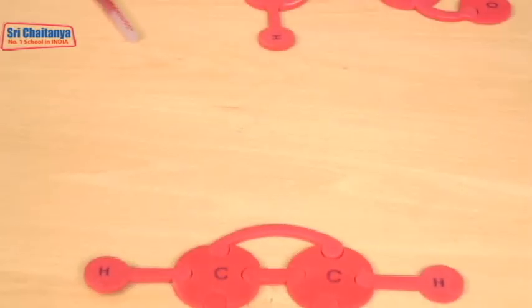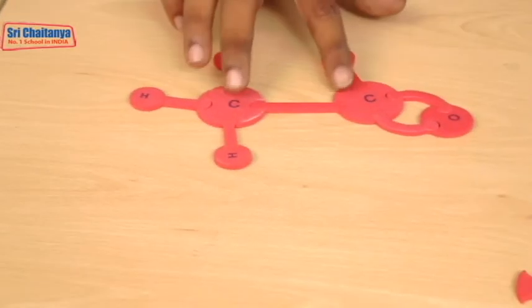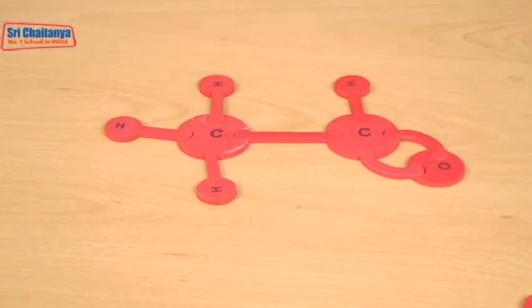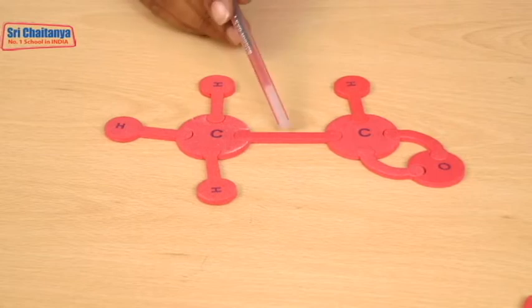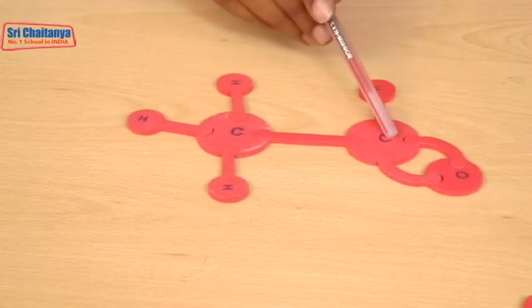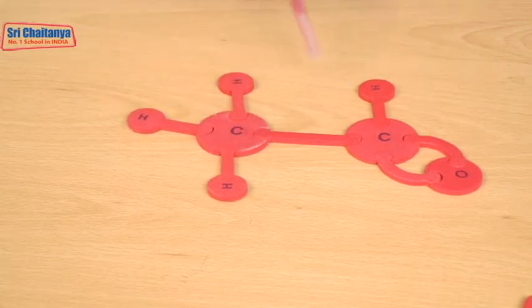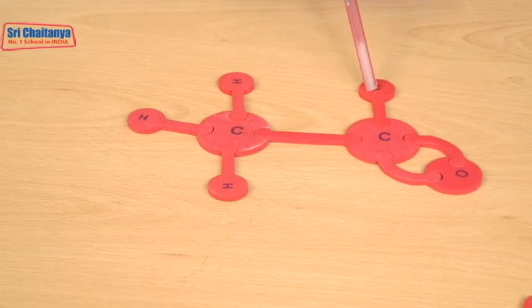Next one, acetaldehyde. In that between carbon atoms, single bond is present. Between carbon and oxygen, double bond is present. Here, one carbon is bonded with 3 hydrogen atoms and another carbon is bonded with one hydrogen atom.